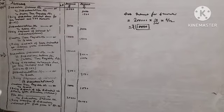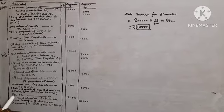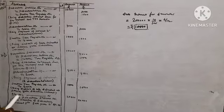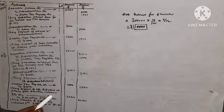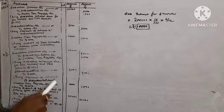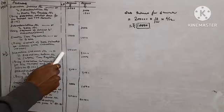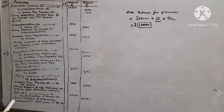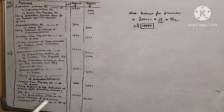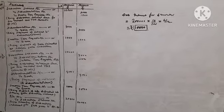On 31st March 2020, debenture interest transfer to P&L account: P&L Account Debit to Debenture Interest Account Rs. 10,000 plus Rs. 10,000 equals Rs. 20,000. Narration: being transfer of debenture interest for full year to P&L account.